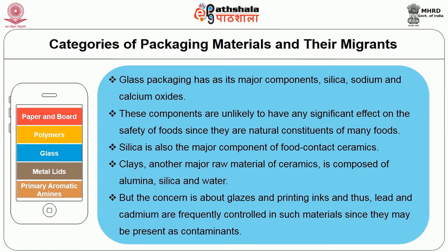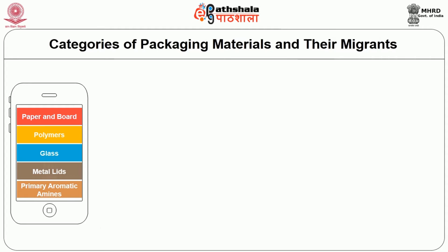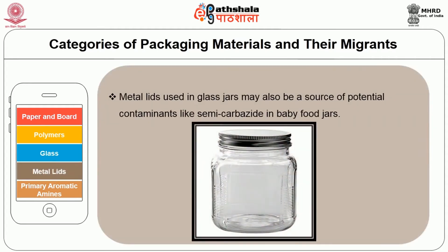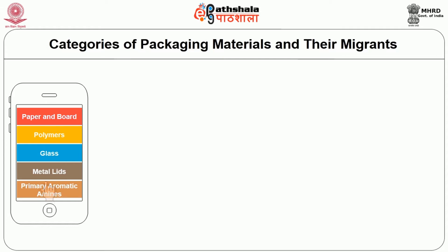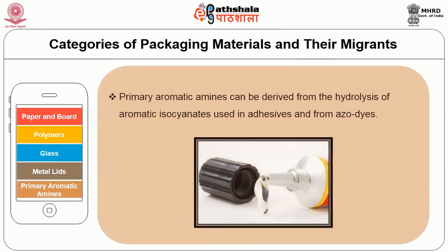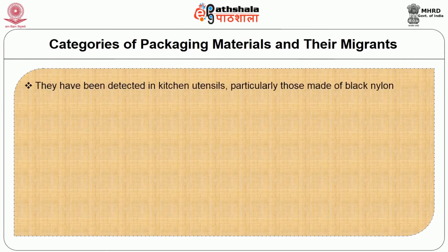Lead and cadmium are frequently controlled in such materials since they may be present as contaminants. The next type of packaging material is metal lids. Metal lids used in glass jars may also be a source of potential contaminants. The last type of packaging material concern is primary aromatic amines. Primary aromatic amines can be derived from the hydrolysis of aromatic isocyanates used in adhesives and from azo dyes. They have been detected in kitchen utensils, particularly those made from black nylon.